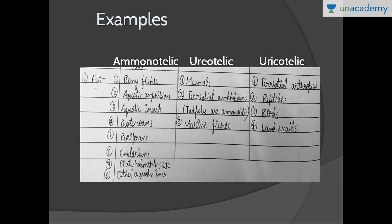Uricotelic organisms include terrestrial arthropods, reptiles, birds, and land snails. All these organisms need a lot of water conservation, so in order to conserve water they excrete uric acid, which results in minimal water loss.